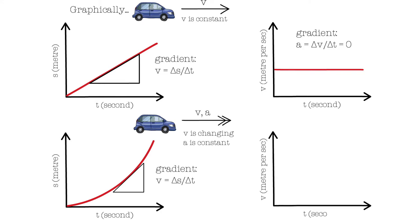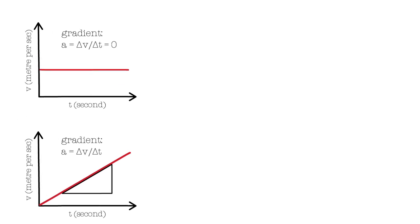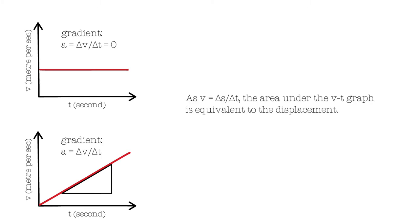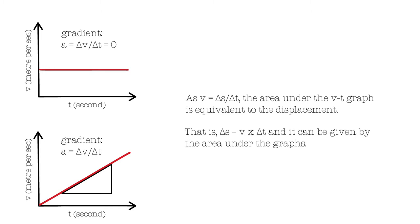If we have a look at the equivalent velocity-time graph, we will get a straight line, because we are assuming that the acceleration is constant. If the acceleration isn't constant, we would see a curve. We can find the acceleration by calculating the gradient. Because the equation for velocity is a change in displacement over the change in time, the area under the velocity-time graph is equivalent to the displacement. By rearranging the equation to make displacement the subject, we get delta S equals V multiplied by delta T, which is basically the area under the velocity-time graph. The area under the first graph is a change in displacement of car A, and the second, car B.